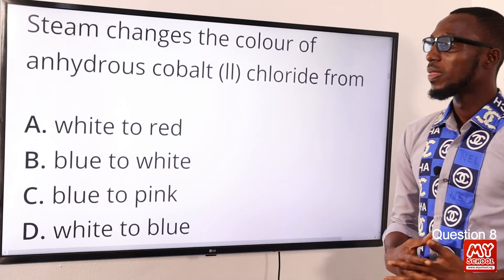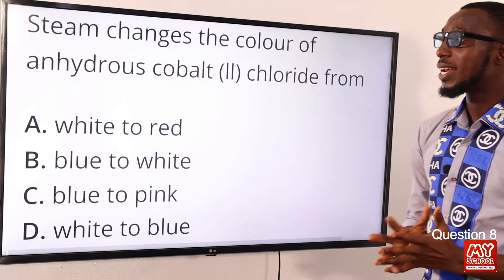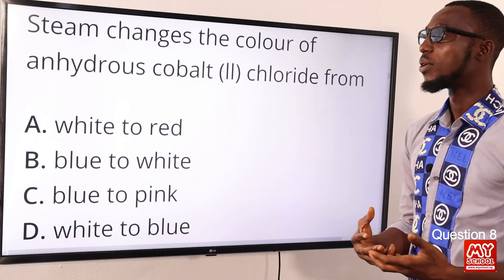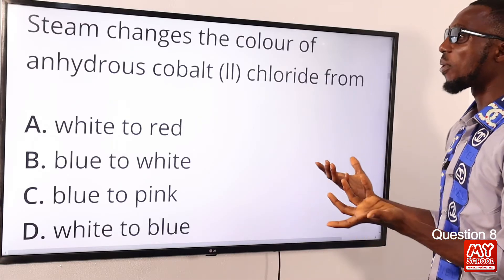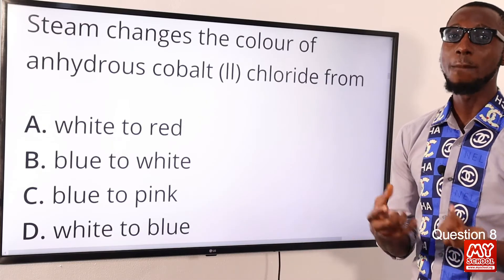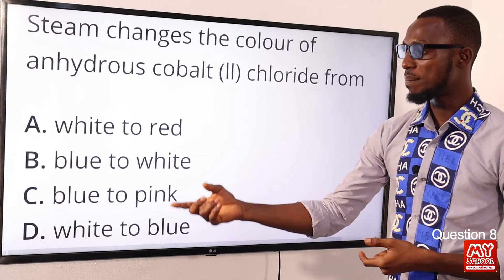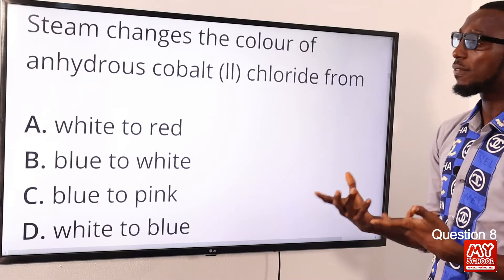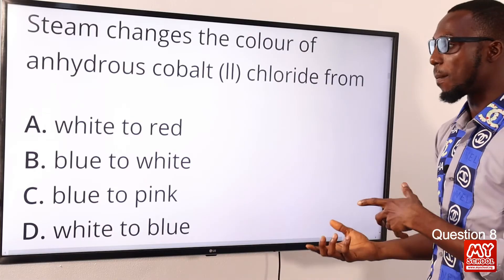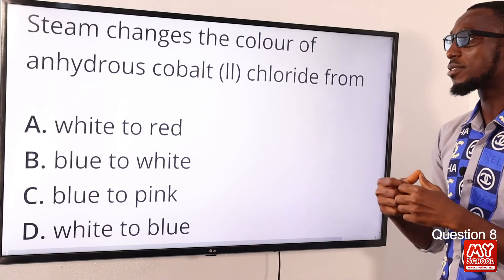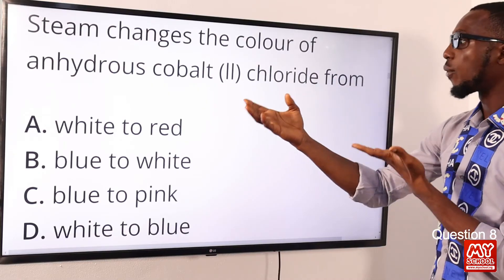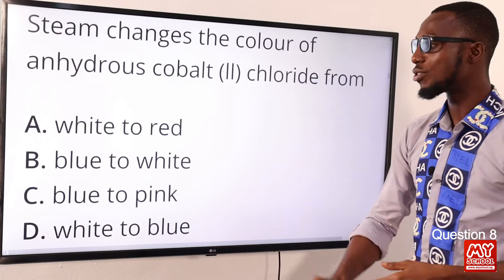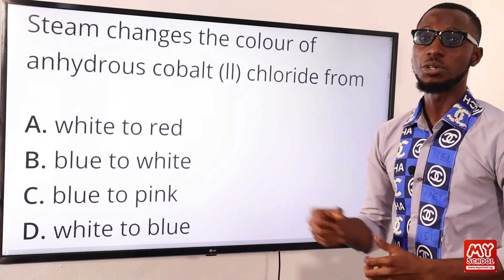Question eight: steam changes the color of anhydrous cobalt chloride from what? We are talking about changing the color from blue to pink hydrate. That is option C. Note that the other test using anhydrous CuSO₄ changes from white to blue. Anhydrous cobalt chloride changes from blue to pink. The correct option is option C.